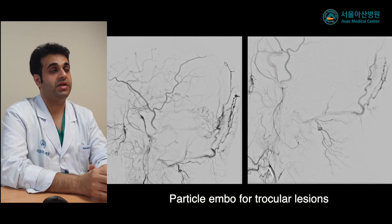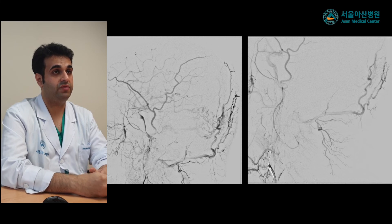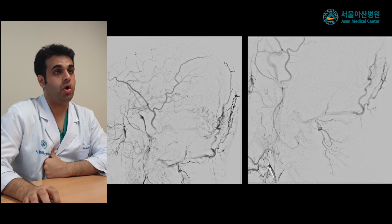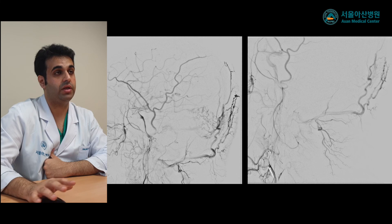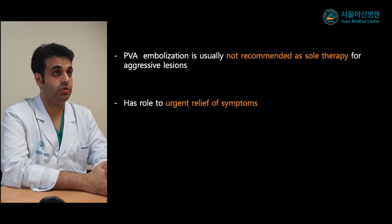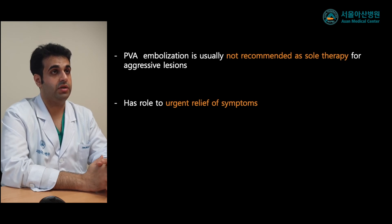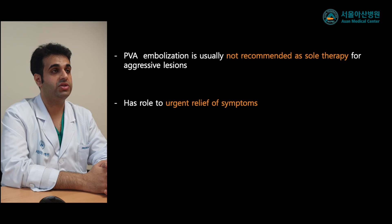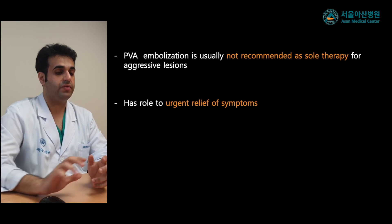The last step was transarterial particle embolization of the torcular dural AV fistula using PVA particles to reduce the shunt flow. However, permanent cure is difficult to achieve with this method alone, and PVA embolization is not recommended as sole therapy for aggressive lesions; its role is urgent relief of symptoms.